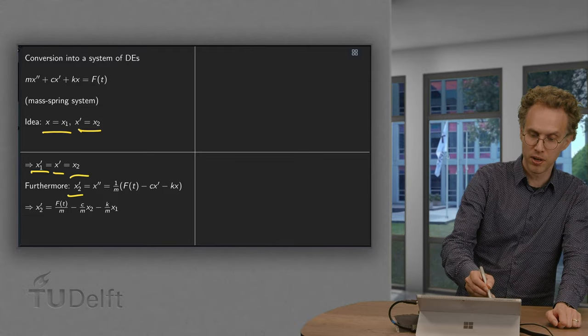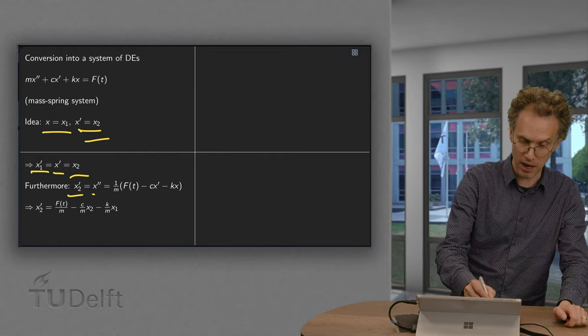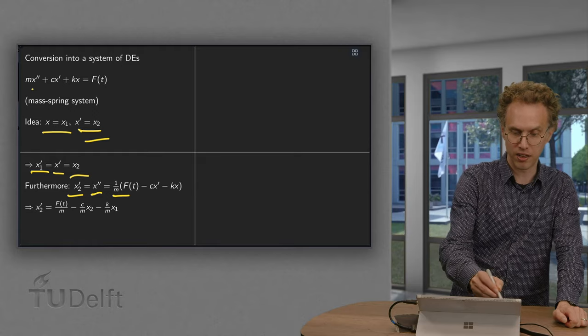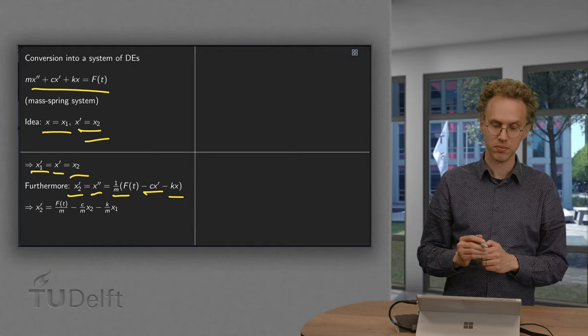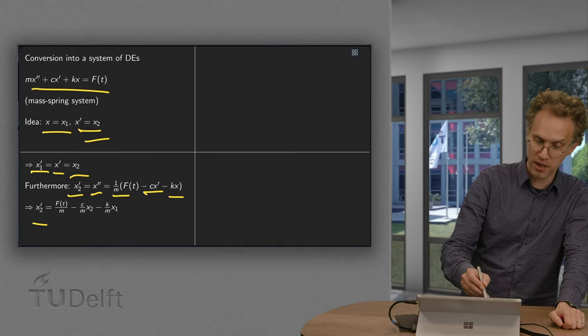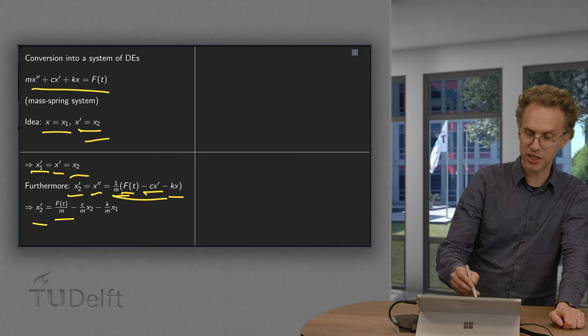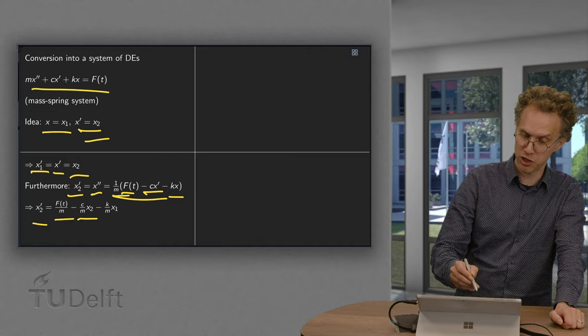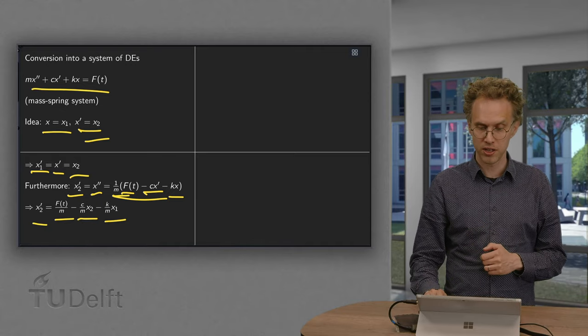Furthermore, x2 prime. Well, x2 equals x prime, so x2 prime equals x double prime. And x double prime equals 1 over m times f of t minus c x prime minus kx. So, x2 prime equals f of t over m, and then here we have minus c over m x prime. With x prime equals x2, and minus k over m times x. And x equals x1.